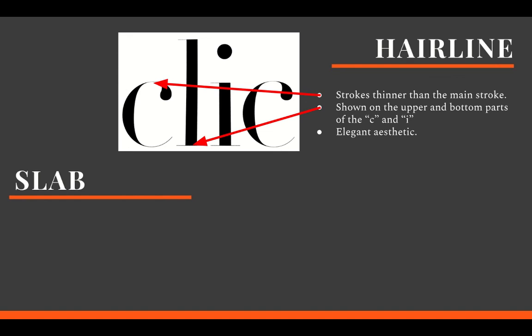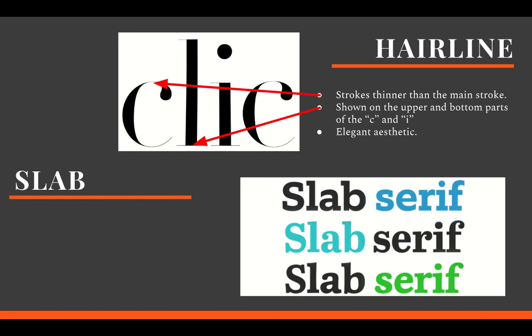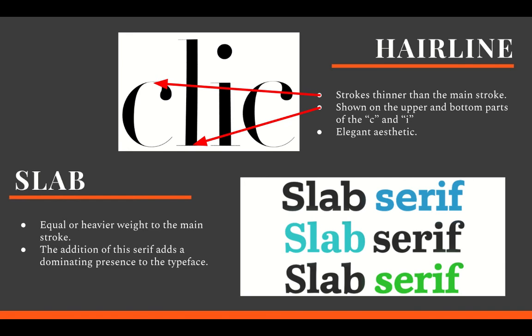The addition of these hairline serifs adds an elegance and chic aesthetic towards the words it is applied to. Next, we have slab serifs — these are thicker than hairline serifs and are of a heavier weight than the main strokes. Through the example, we can identify that the serif is much thicker than hairline strokes. In some cases the serif can also be a heavier weight than the main stroke. This type of serif adds a dominant quality as it is quite loud to the eye.